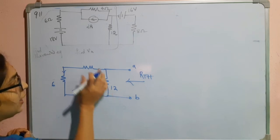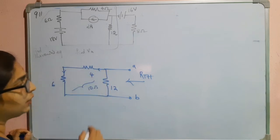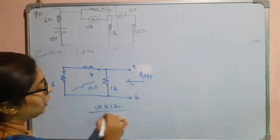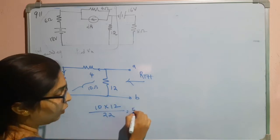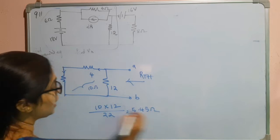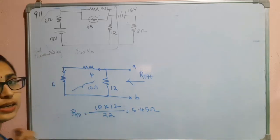This is in series that is 10 ohm. This will give you 10 ohm and 10 ohm will be in parallel with the 12 ohm. So, 10 into 12 divided by 22, so that will give you around 5.45 ohm. This is RTH.